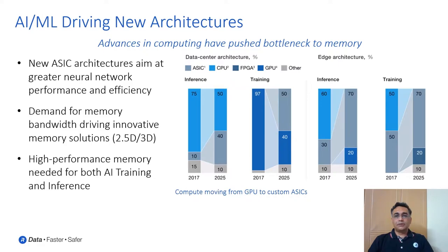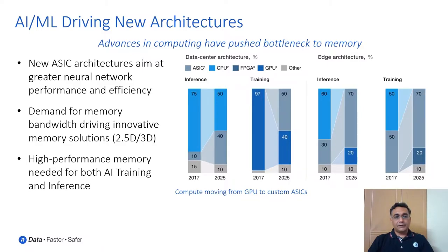Interest in neural networks was developed early in the 80s and 90s but never took off then. There were two main reasons: compute was not fast enough, and memory was not high performance — capacity was not enough. Because of these limitations, conventional approaches were performing much better. Today we have much better compute and memory performance and capacity. Now neural networks can outperform conventional algorithms. New ASICs are being built, demanding high bandwidth memory, creating demand for innovative memory solutions like 2.5D and 3D memories.